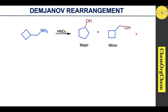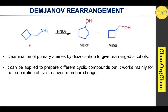First, let's understand what the Tiffeneau-Demjanov rearrangement is all about. Named after a Russian chemist, according to this rearrangement, an aliphatic primary amine when treated under nitrous acid rearranges to give the corresponding alcohol derivative. This rearrangement reaction takes place by de-amination of the primary amine when you treat with nitrous acid, to give the rearranged alcohol.